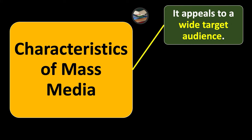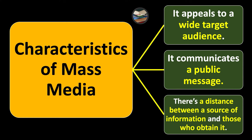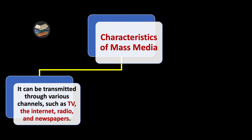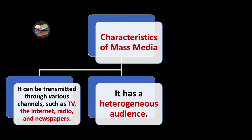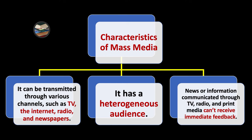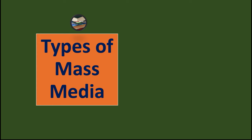The characteristics of mass media include: it appeals to a wide target audience and communicates a public message. There is a distance between the source of information and those who receive it. It can be transmitted through various channels such as TV, the internet, radio, and newspapers. It has a heterogeneous audience — meaning audiences come from different social, economic, and political backgrounds. News or information communicated through TV, radio, and print media cannot receive immediate feedback.